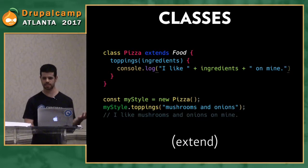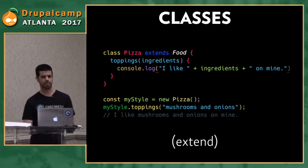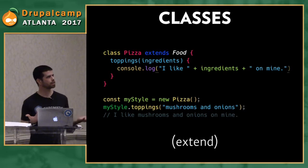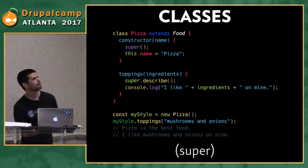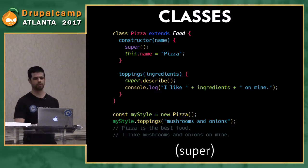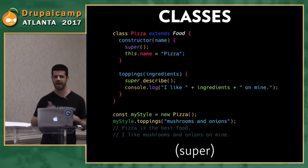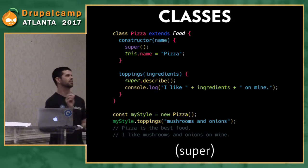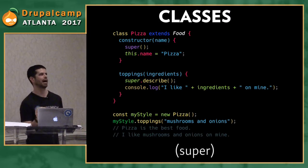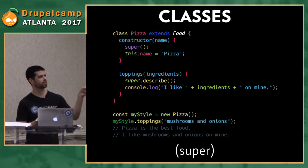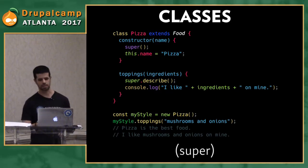You can also extend your classes to create a subclass. Creating a pizza class that extends food means pizza gets everything food has. Then you add pizza-specific methods like toppings — mushrooms and onions. In the constructor you use 'super', which refers to the parent class food. Inside the toppings method, 'super.describe' calls food's describe method. Running myStyle.toppings logs 'pizza is the best food' and 'I like mushrooms and onions on mine.'